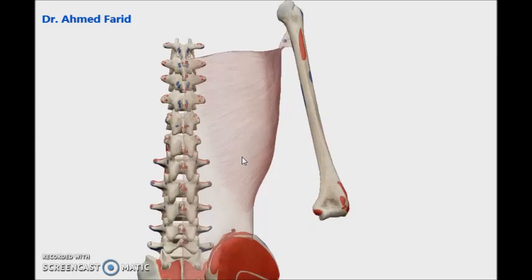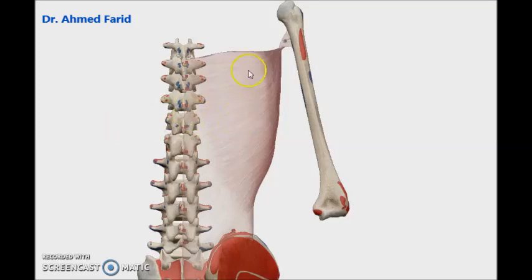Applying the rules of action: latissimus dorsi is inserted into the humerus, so it will move the humerus on the shoulder joint. Because it comes from the posterior aspect, it will extend the humerus at the shoulder joint — moving the humerus posteriorly. Because it is inserted into the front of the humerus, it will make medial rotation. And because it comes from medial to lateral, it will make adduction of the humerus.